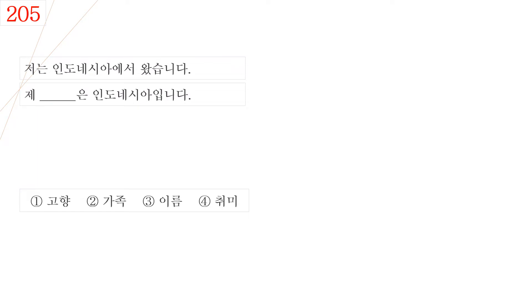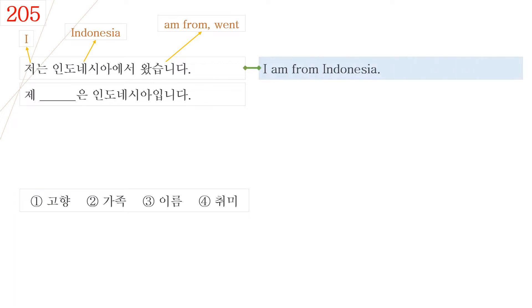Question No. 205. Let's read the dialogue first. 저는 인도네시아에서 왔습니다. 제 무엇은 인도네시아입니다. 저는 means I, 인도네시아 means Indonesia, 왔습니다 means I'm from or went. So this sentence means I'm from Indonesia.